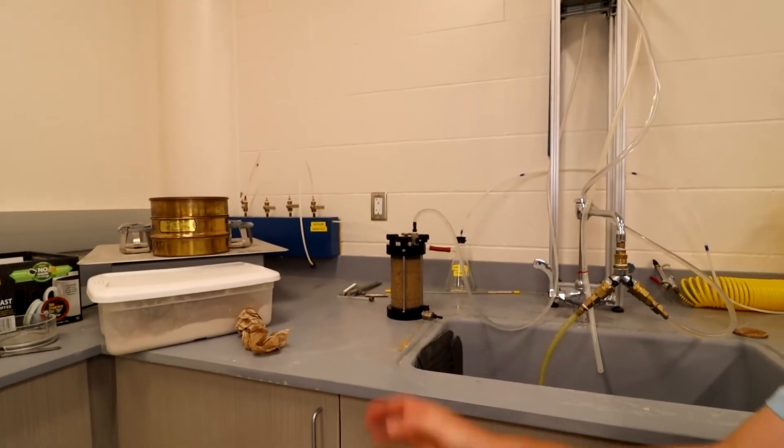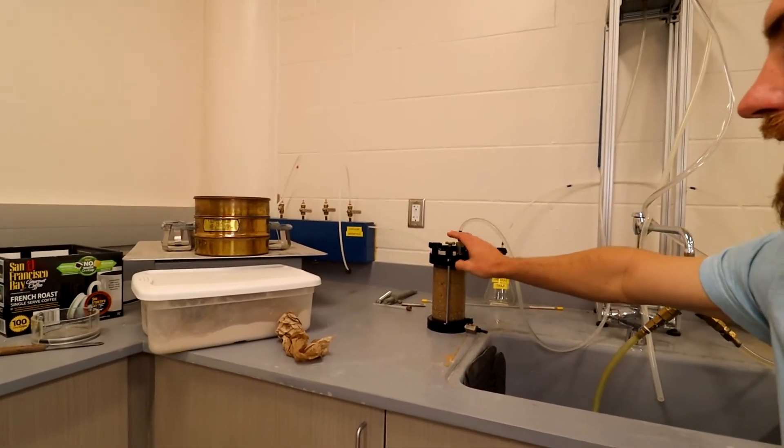This is the constant head permeability test. Only thing left to do now is clean this out, make sure everything's dry, and generally we would do this again on another sample and do the whole thing over just to make sure we can test it at different void ratios and densities, but not in this lab. So any questions at all, let me know. Hope you enjoyed the video and good luck on the lab report.